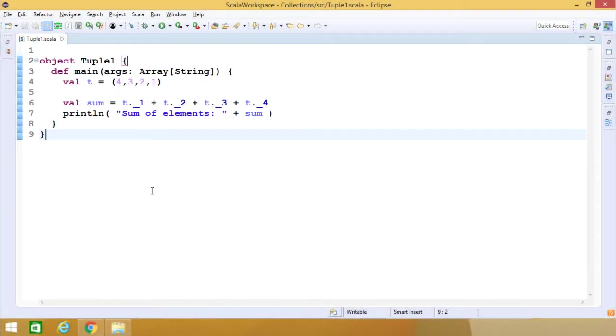In this code, you can find that we have defined one tuple object t which has four different values, all of them of type Integer. To access each of these values, we use t._1, t._2, t._3, and t._4. We have added them, so the sum of the elements will be obtained.